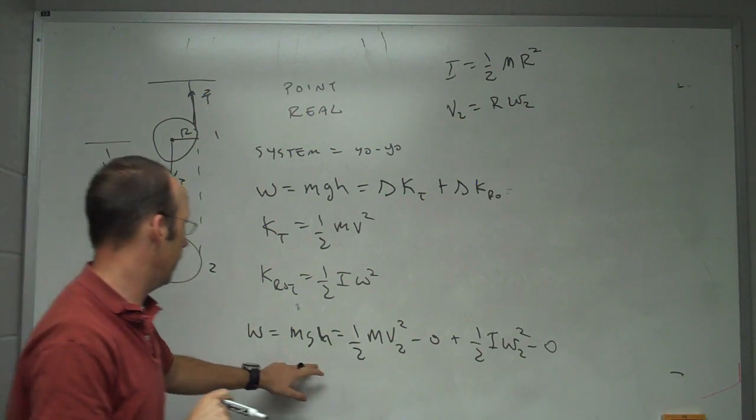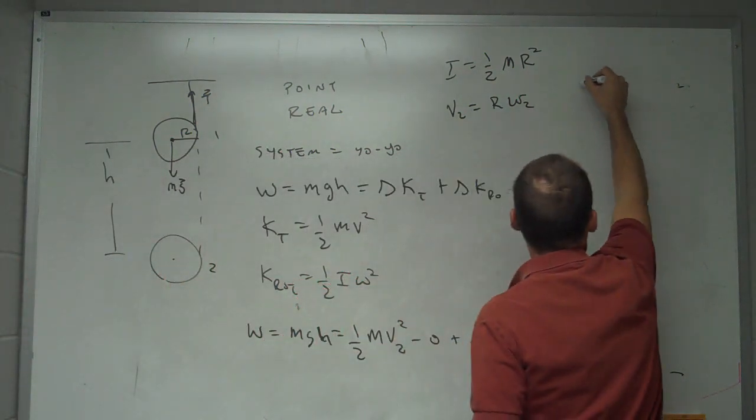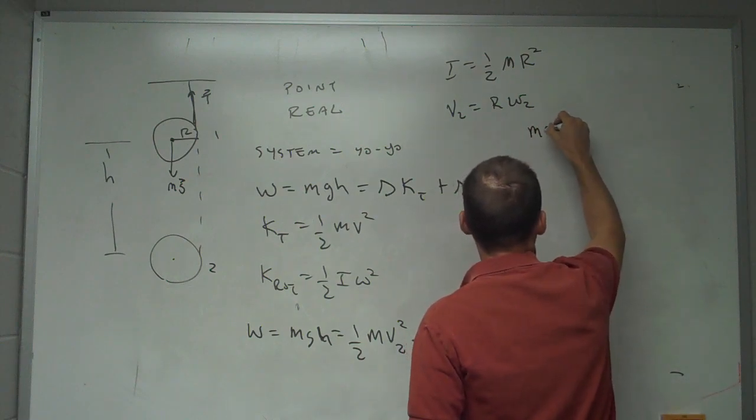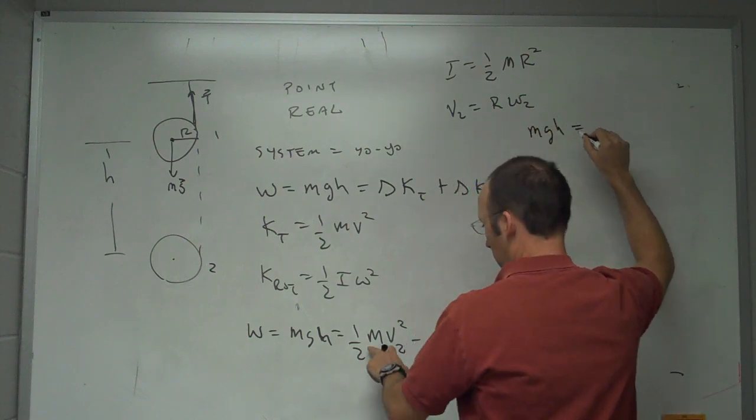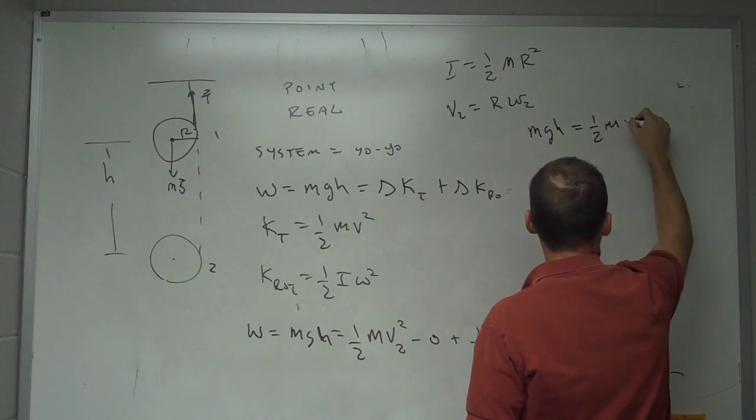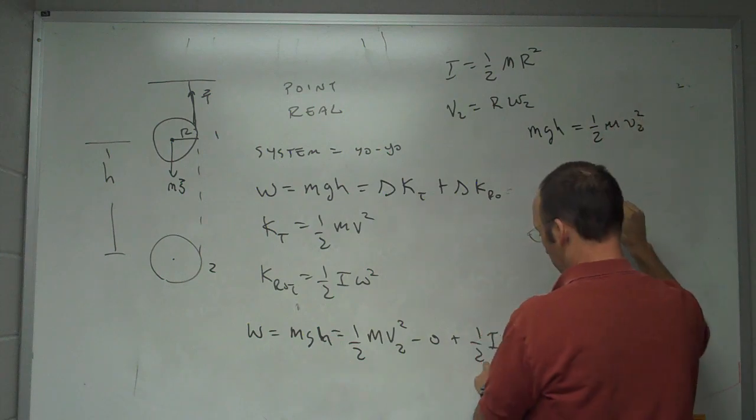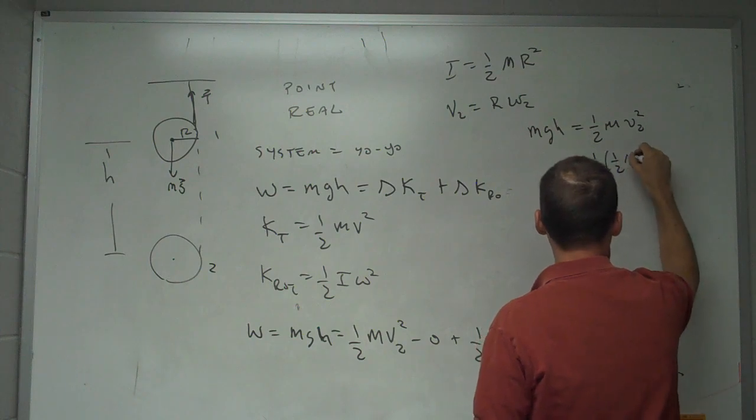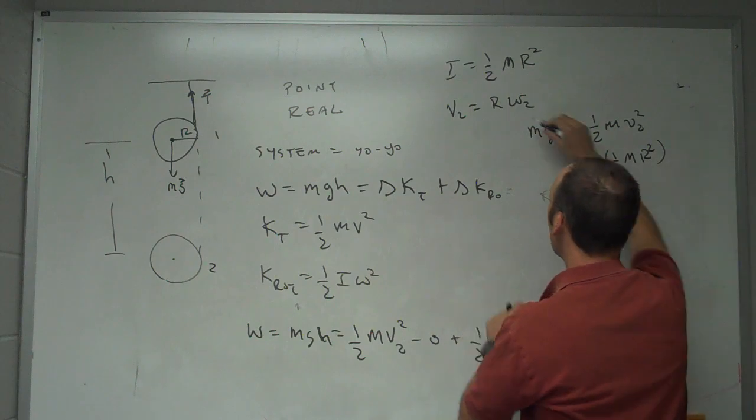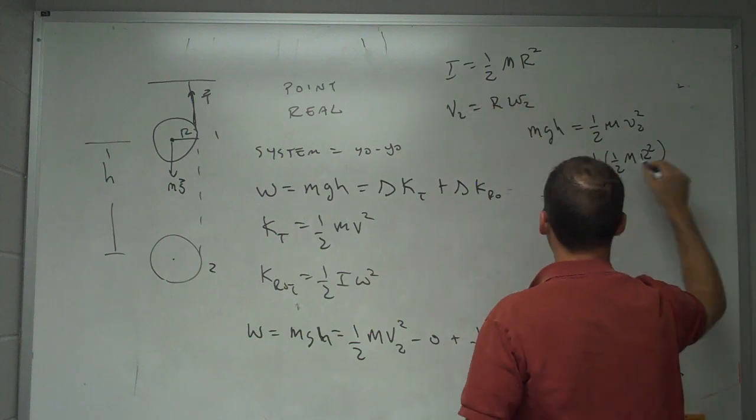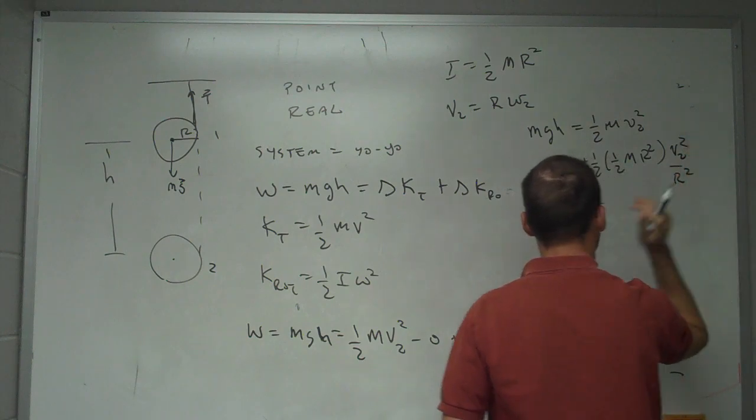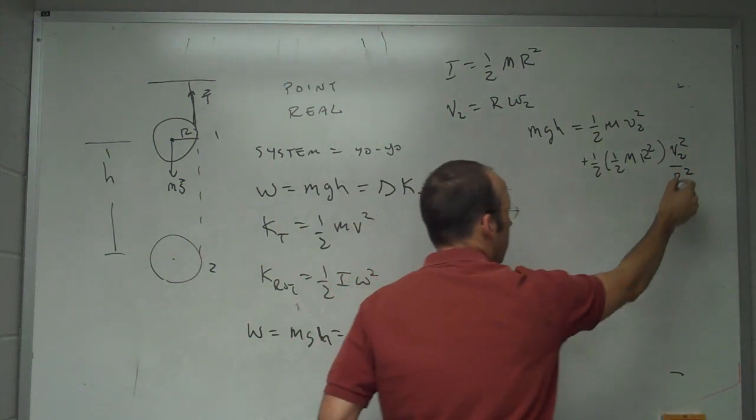Okay, so if I put those in, down here I get work is mgh equals one-half m v2 squared and then this term is going to be plus one-half times one-half m r squared times omega 2 is going to be v2 over r squared. So it's going to be v2 squared over r squared. So these cancel.